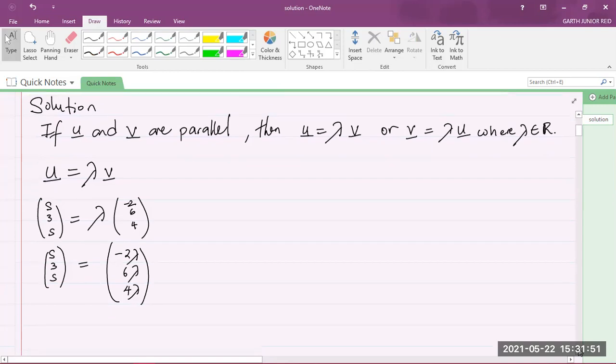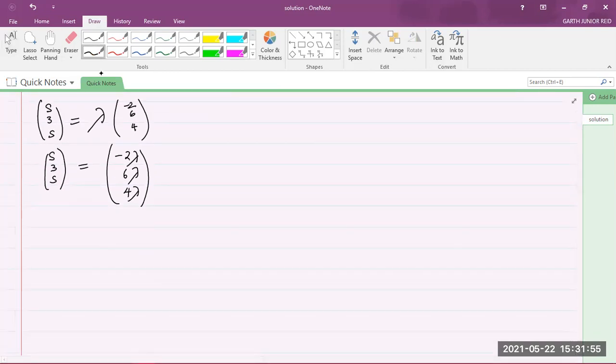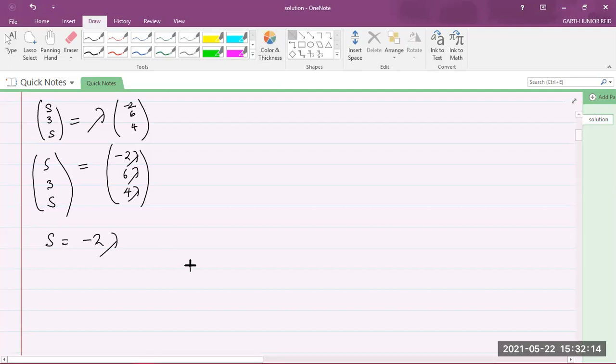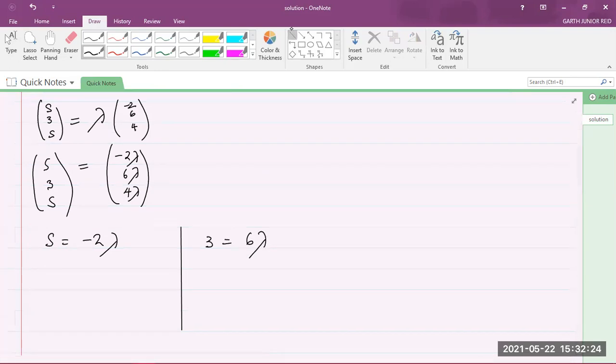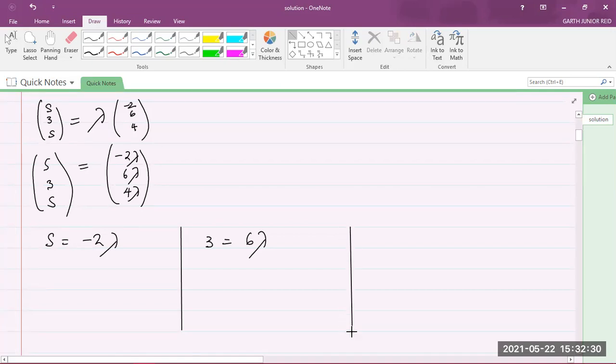So now we have equal vectors, which means that the corresponding elements are going to be equal. So I can now write S is equal to negative 2 lambda, just equating the corresponding elements. I could also say 3 is equal to 6 lambda, and my last equation is going to be S is equal to 4 lambda.